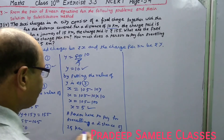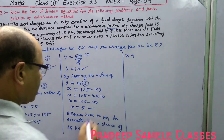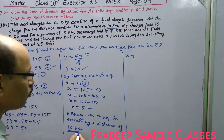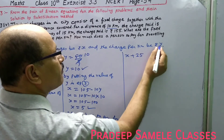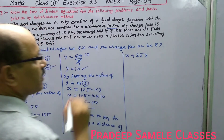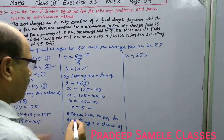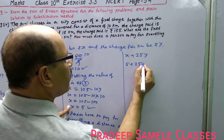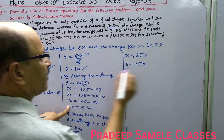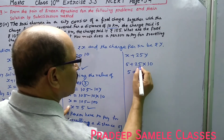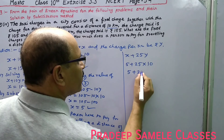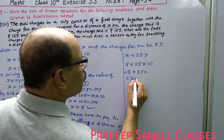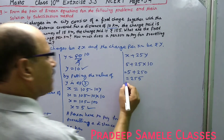For 25 km, the total charge = fixed charge X plus per kilometre charge Y multiplied by 25 km. The value of X is 5, plus 25 multiplied by Y whose value is 10, so 5 + 25 × 10 = 5 + 250 = 255. Therefore the charge for travelling 25 km is Rs. 255.